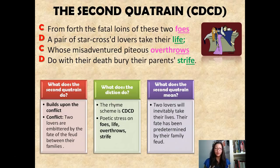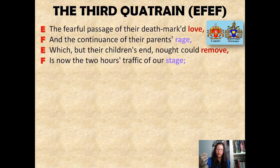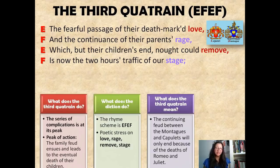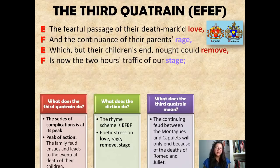The third quatrain begins to take a turn in the story. We're going to see what causes the death of the two children, Romeo and Juliet. It takes the form of EFEF: 'The fearful passage of their death-marked love / And the continuance of their parents' rage, / Which but their children's end naught could remove, / Is now the two hours' traffic of our stage.' We see poetic stress on the words 'love' and 'rage,' showing a theme of love and hate emerging in the poem.